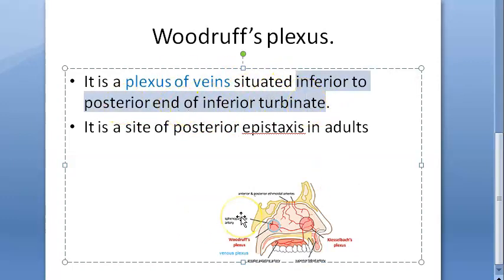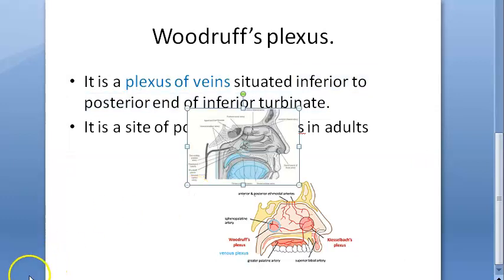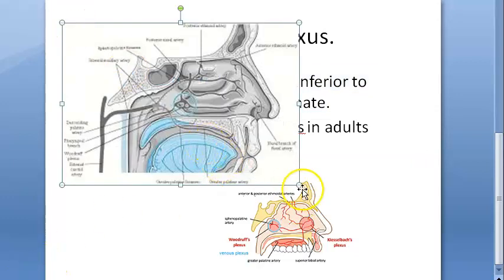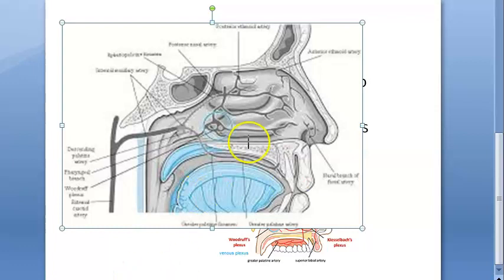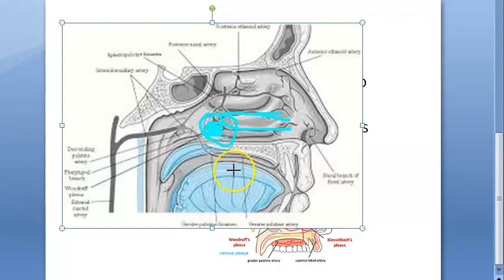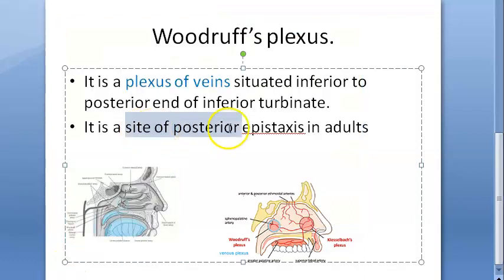So they are talking about the inferior turbinate, its posterior end, and inferior to that. Here you have the inferior turbinate — posterior to it is this area, and the inferior part of that posterior region is where you have the Woodruff's area. So Woodruff's plexus is situated at the inferior part of the posterior end of the inferior turbinate.